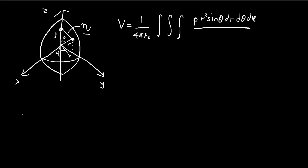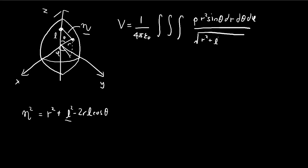What is eta going to be equal to? We can use the cosine law. So eta squared is equal to r squared plus L squared minus 2rL cosine of theta. In our case, L is the distance of the point where we're trying to measure the potential — the distance from that point to the center of the sphere. For the bounds of the integral, since we're integrating over a sphere, it goes from 0 to r, 0 to pi for theta, and 0 to 2pi for phi.